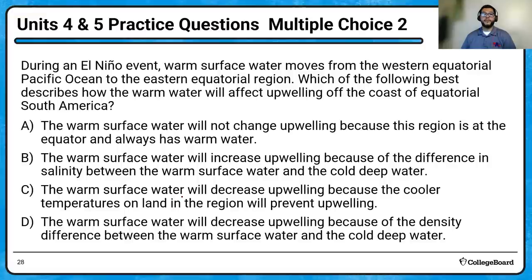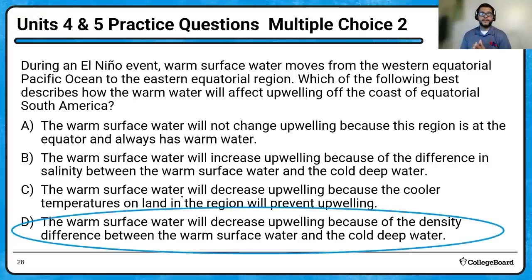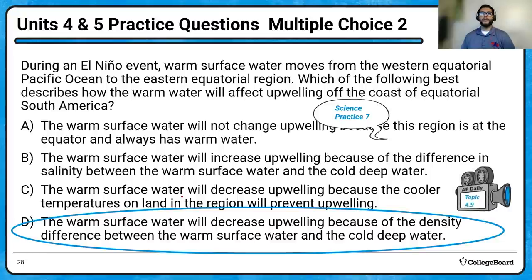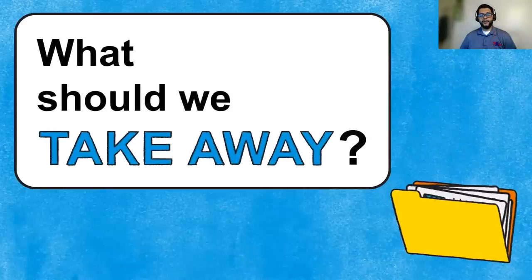Okay. So now question number two. If we take a look here. During an El Nino event, warm surface water moves from the Western Equatorial Pacific Ocean to the Eastern Equatorial Region. Which of the following best describes how warm water will affect upwelling off the coast of Equatorial South America? So some big words here. Upwelling, which ocean we're at? And it's in El Nino. So that's going to be that unusual warming. The warm surface water will not change upwelling because this region's at the equator and always has warm water. The warm surface water will increase upwelling because of the difference in salinity. The warm surface water will decrease upwelling because the cooler temperatures on land. Or is it the warm surface water will decrease upwelling because of the density difference between the warm surface water and cold deep water. So if you want, take a minute, think about this one and give it a shot. If you want to pause it, but if not, the answer should, in this case, should be D because that's what causes it, right? You end up with a change in density. And so because of that change in density, that cold water doesn't get to come up anymore. It doesn't well up, right? And so that ends up causing this warm spot. And that's why you end up with poor fishing off the coast of South America. And so this is a practice seven. So identifying environmental problems. And of course, make sure you review the El Nino topic is on this one.